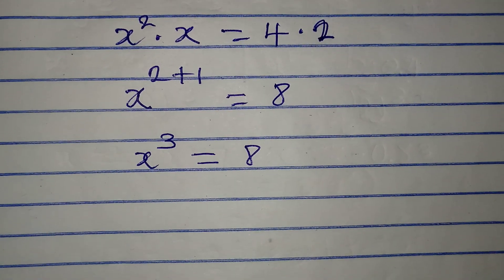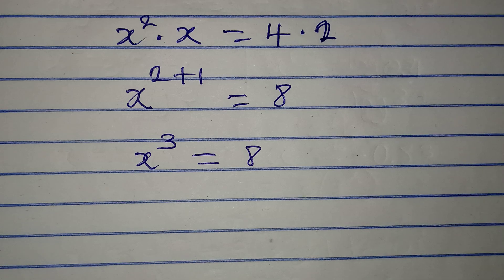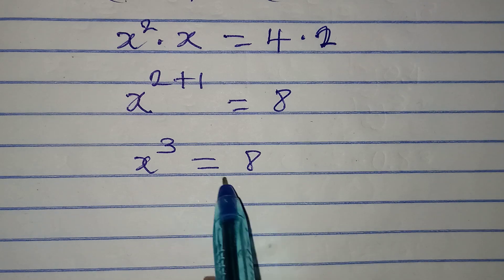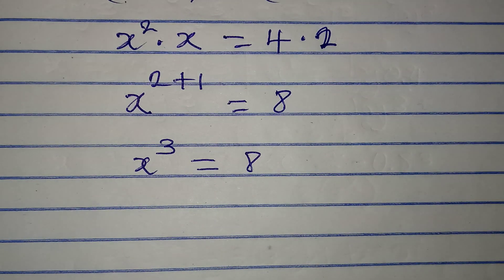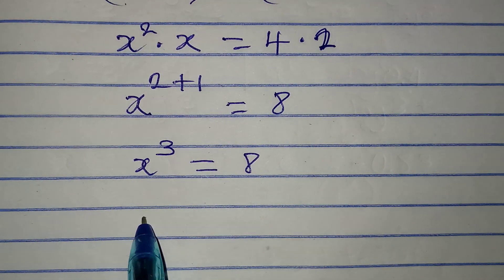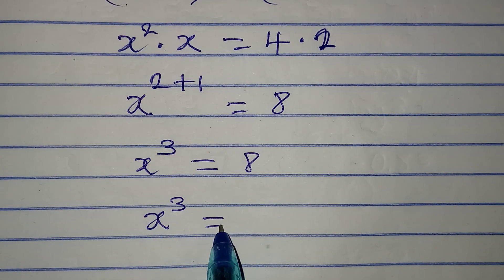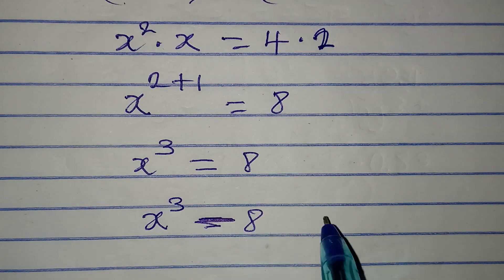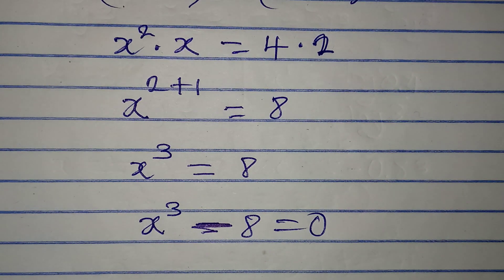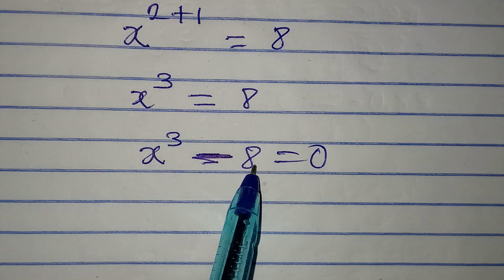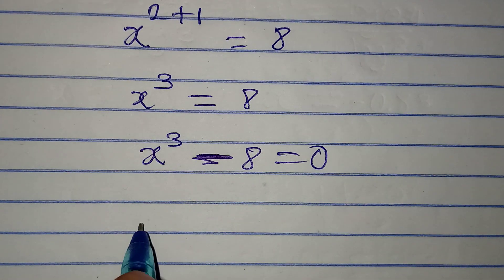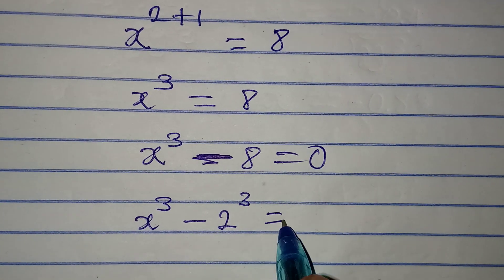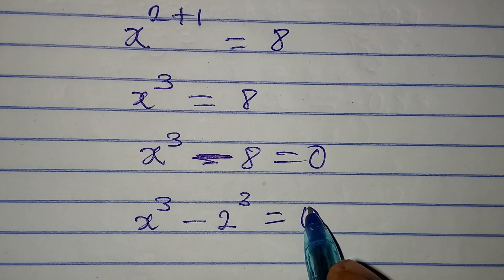Instead of taking the cube root of 8, let's bring 8 to the left-hand side, giving us x to the power of 3 minus 8 equals 0. We then express 8 in index form, so we have x cubed minus 2 cubed equals 0.